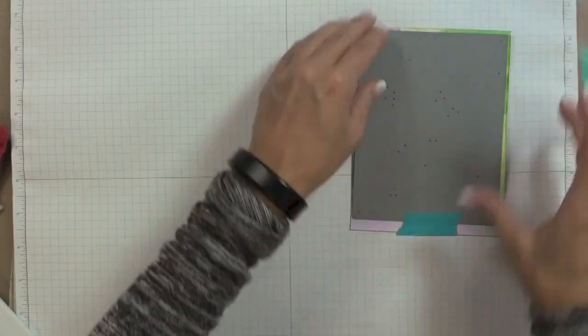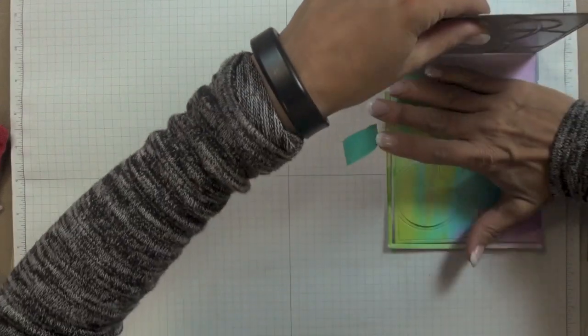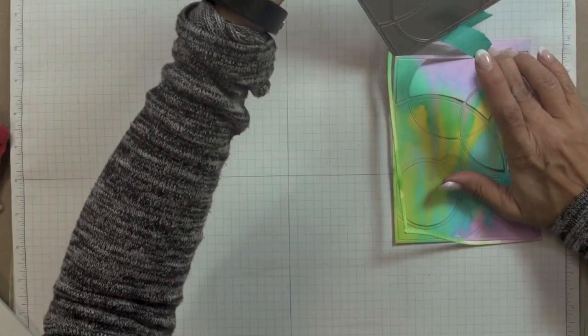Now once my piece was die cut I placed it carefully on my surface trying to keep all the pieces intact so that they would be easy to find later when I was assembling my card.